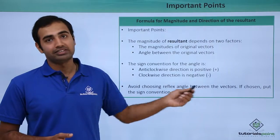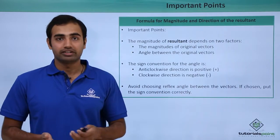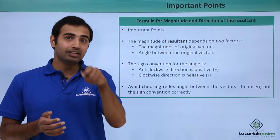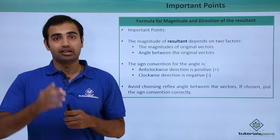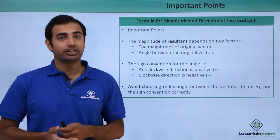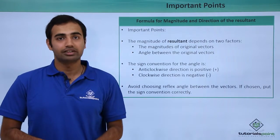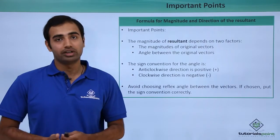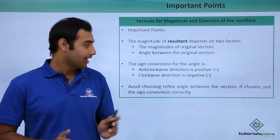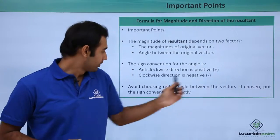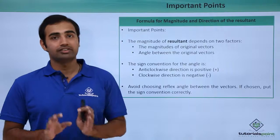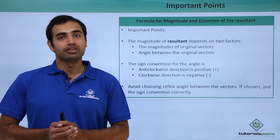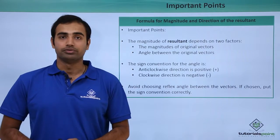Avoid choosing the reflex angle between the vectors. You can use the reflex angle for calculations, but it will make the work tedious. If that angle is chosen, the sign convention must be applied correctly.